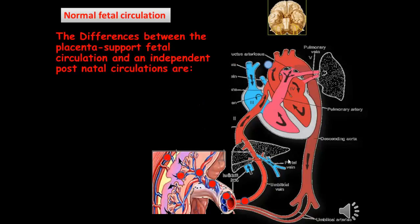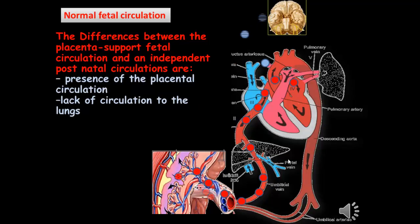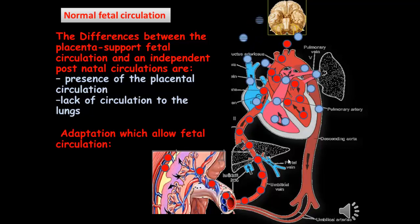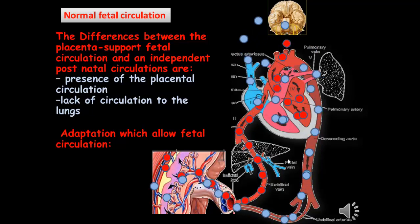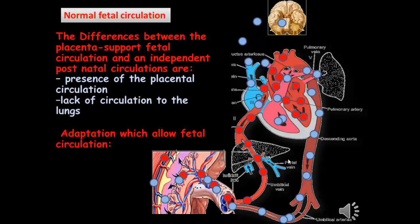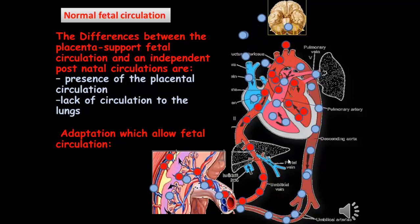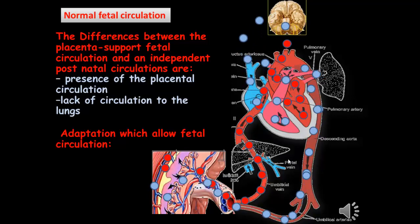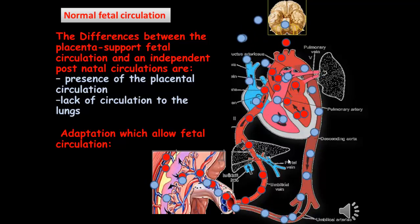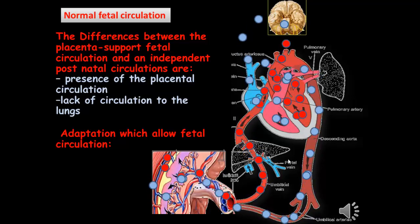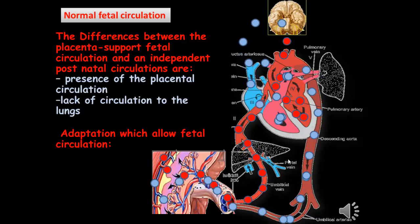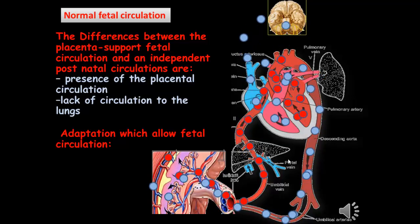Normal Fetal Circulation: The difference between the placental-supported fetal circulation and independent postnatal circulation are the presence of the placental circulation and the lack of circulation to the lung. Adaptations allowing the fetal circulation include the umbilical vein and artery, ductus venosus, foramen ovale, and ductus arteriosus.